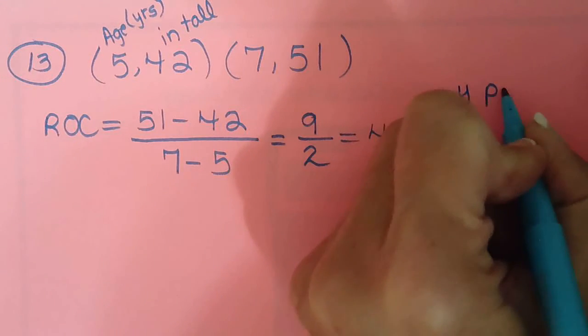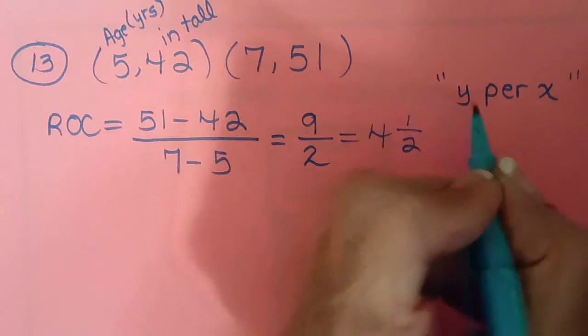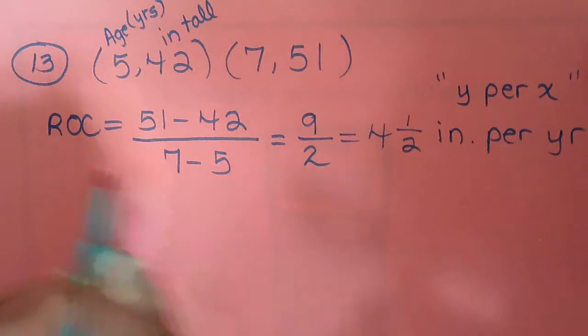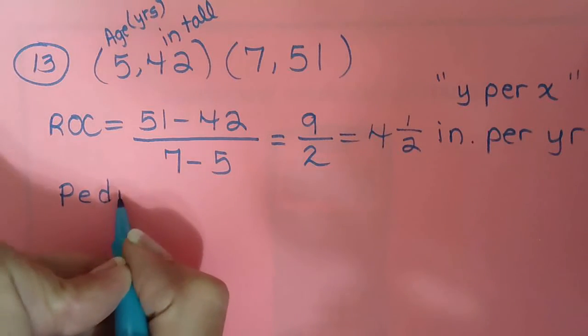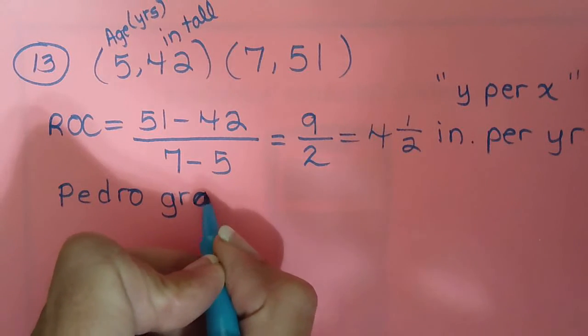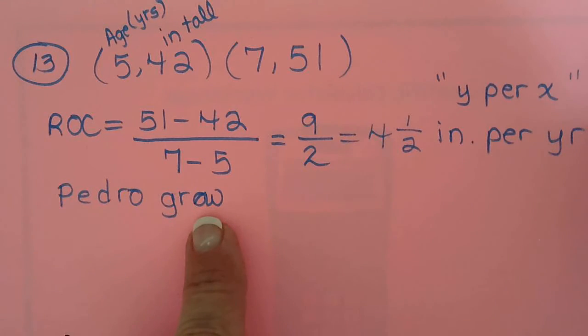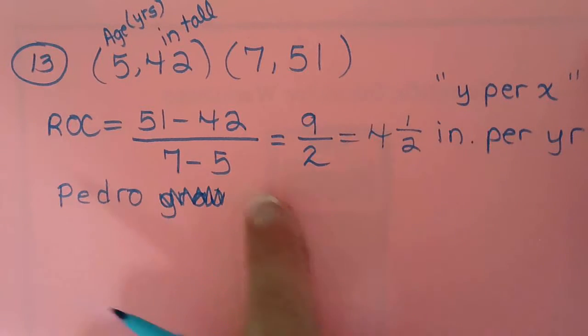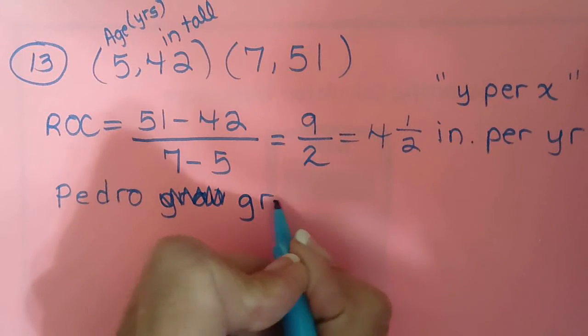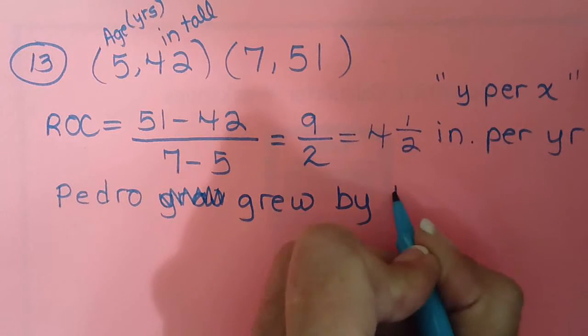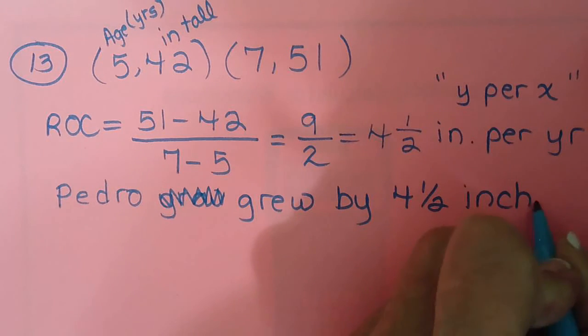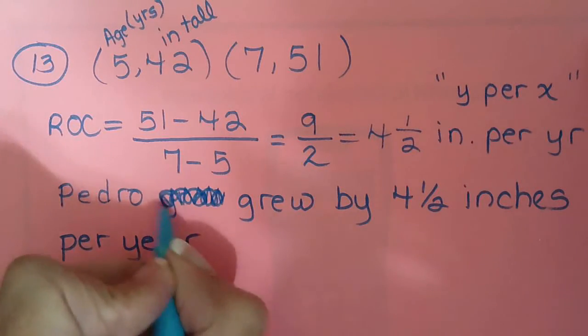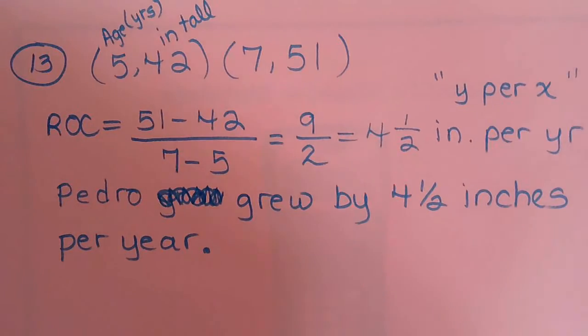Okay, now we have to do our y per x. So that would be inches per year. So Pedro grew, so grew is our word for, sorry, that's a bad grew. Okay, saying that it's positive. He didn't go down. He went up. So we're going to use the word grew. So Pedro grew by 4 1/2 inches per year.